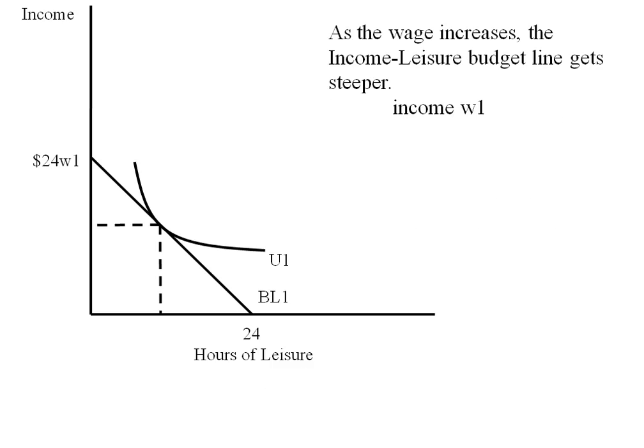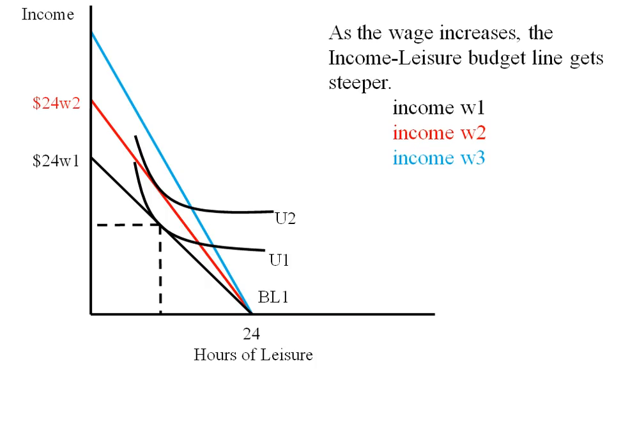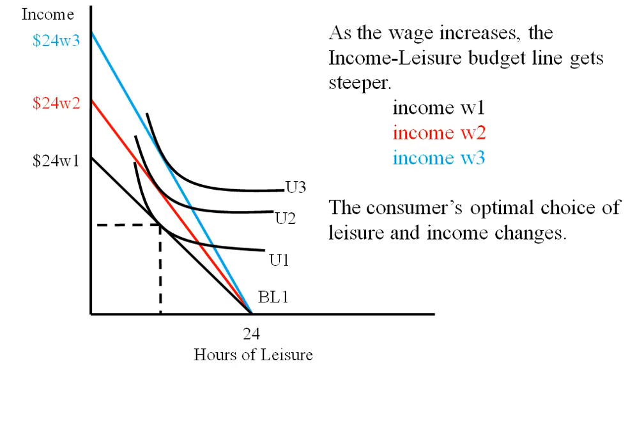As we increase the wage, this income-leisure budget line is going to get steeper. So here we've got income of W1. If I raised your wage per hour to W2, then you could get 24W2 and there'd be a new tangency condition. If I raise the wage again, the maximum income could be even higher and you'd have a different indifference curve tangency point. So the optimal choice of leisure and income is going to change as the wage changes.